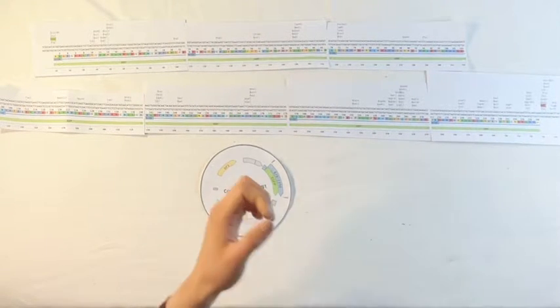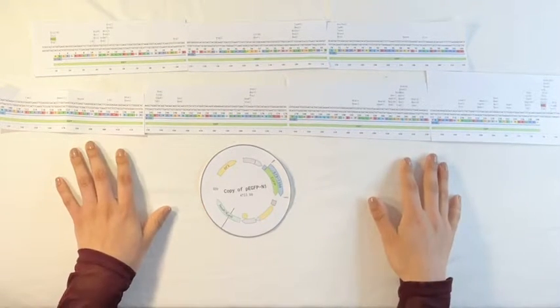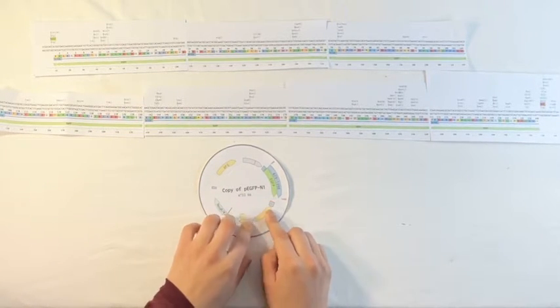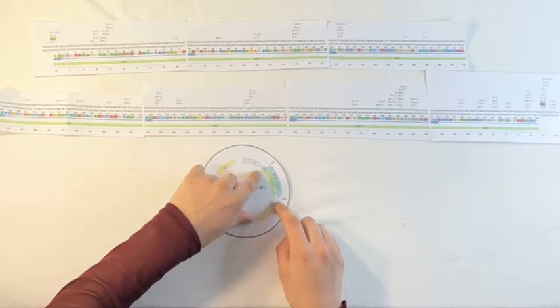Now we're going to go over what's actually occurring within the PCR reaction. We're going to start off with our pEGFP-N1 plasmid, and our goal is to only amplify this EGFP gene segment.